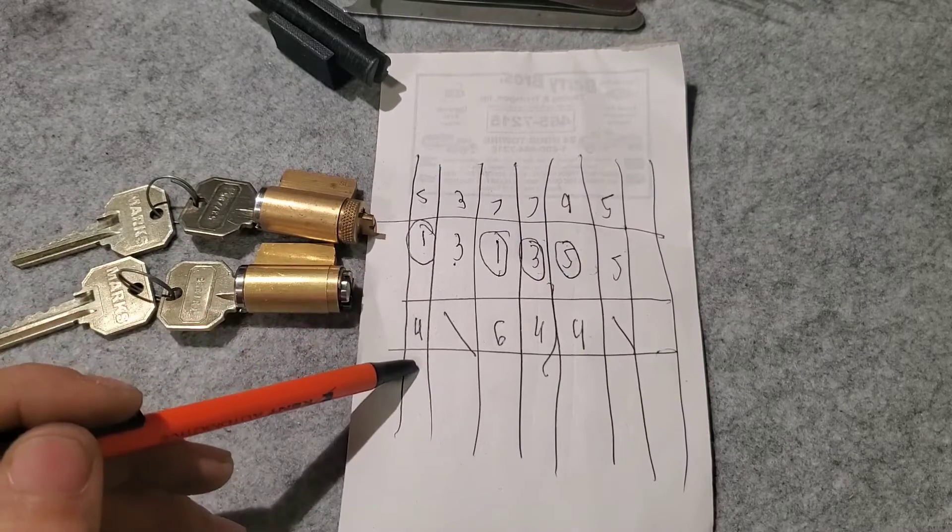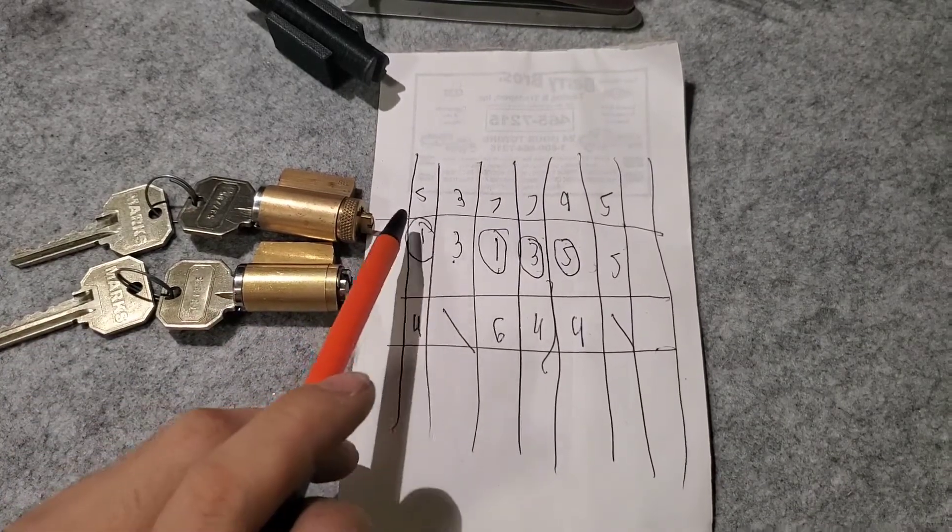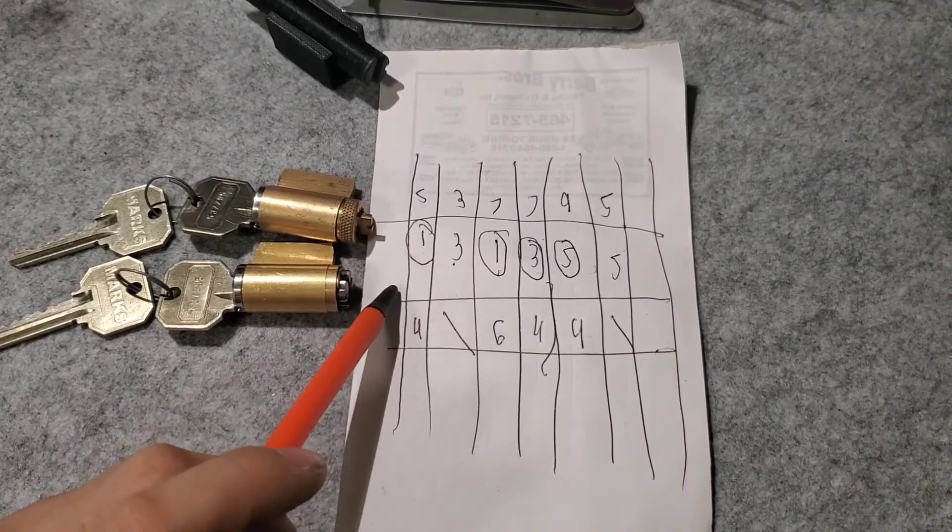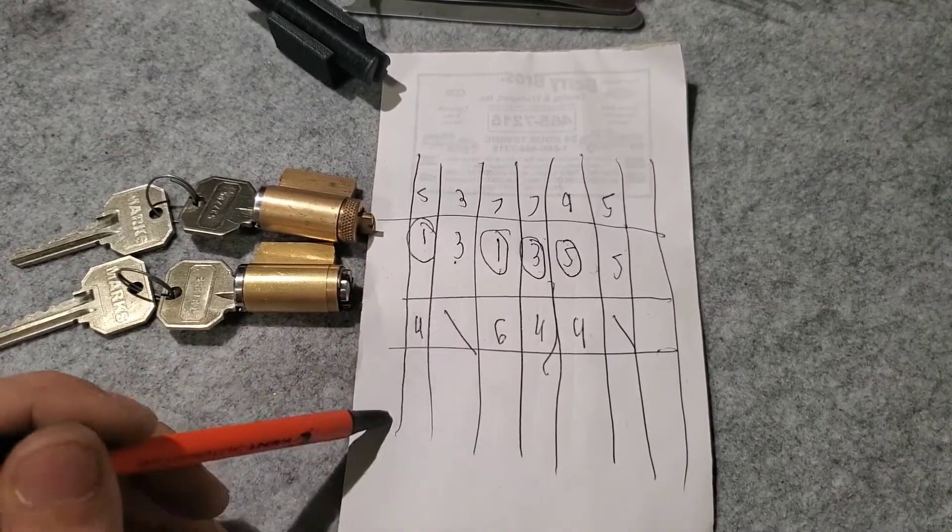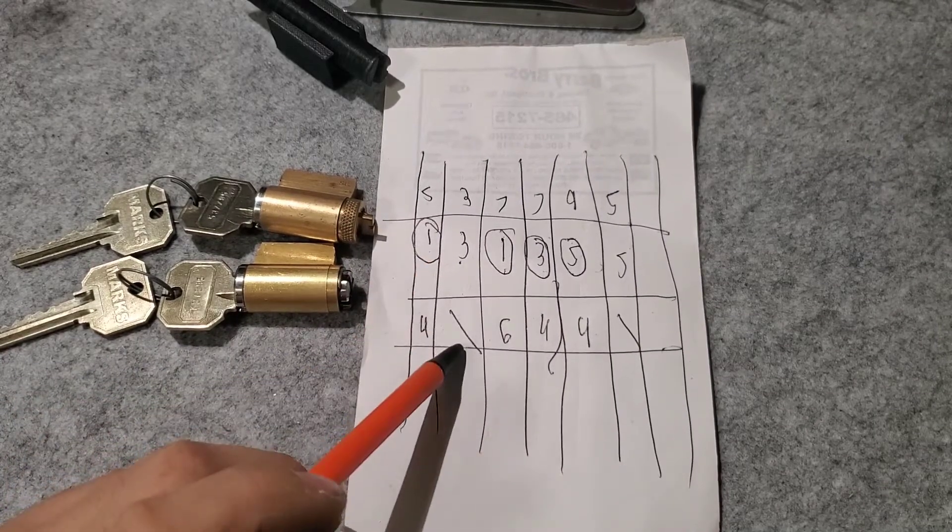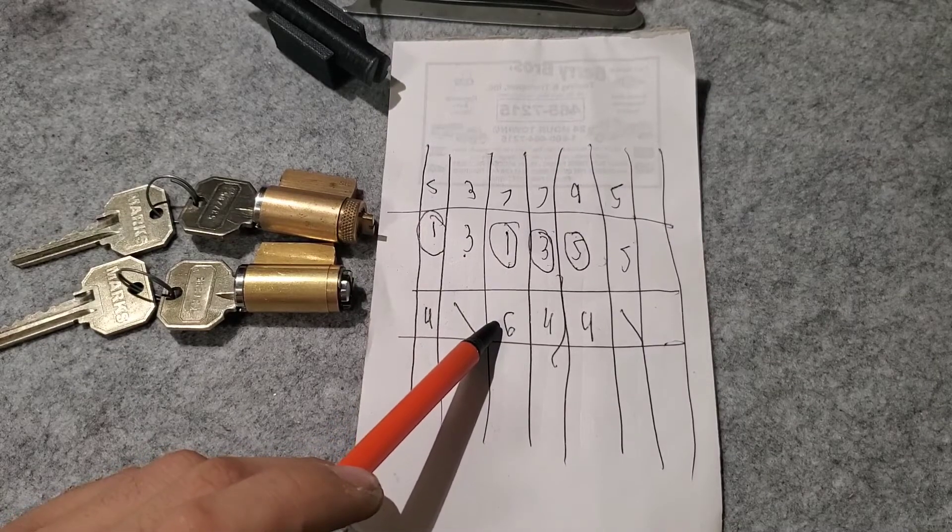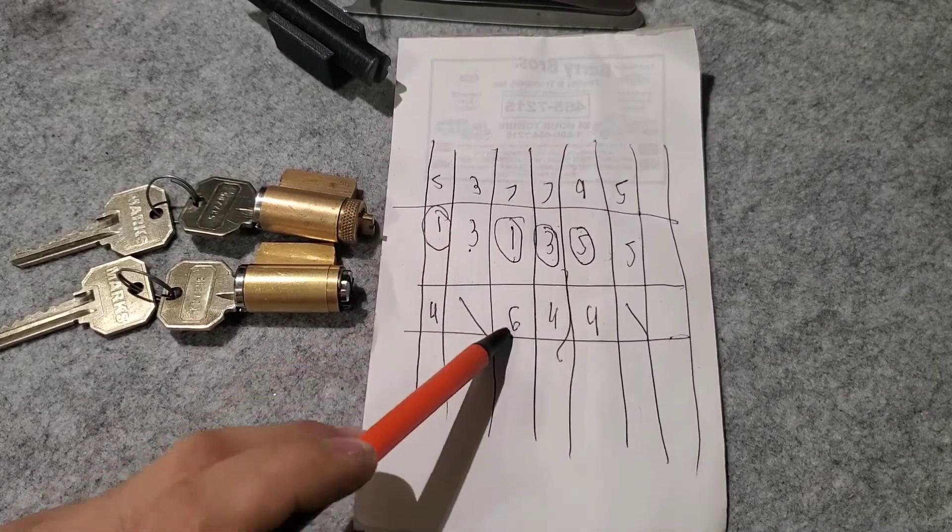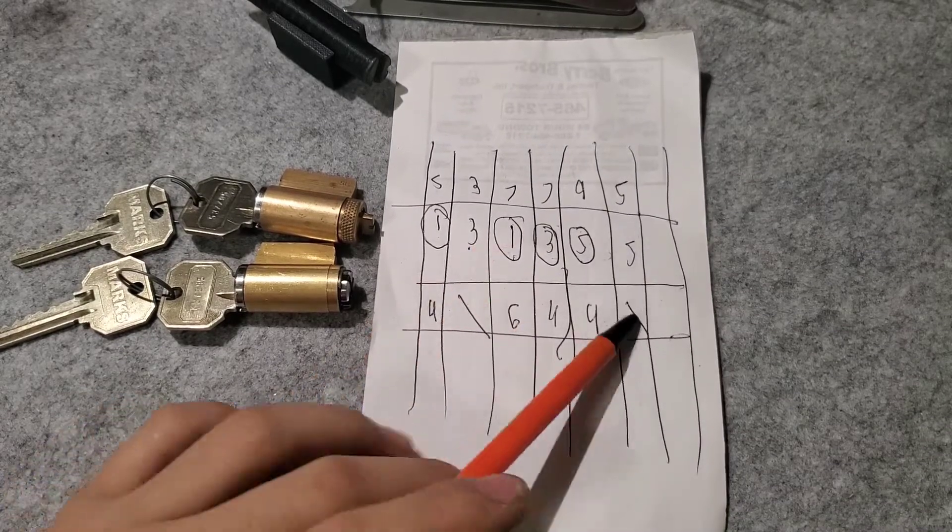To make the difference, we're going to put a mastering pin or master wafer. The way you calculate that is the absolute difference, so no negative or positive difference. Between one and five is four, so we put four. No difference on chamber two, so nothing there. Chamber three, one and seven difference is six. Four and four.